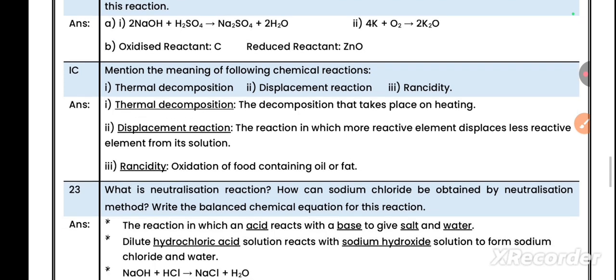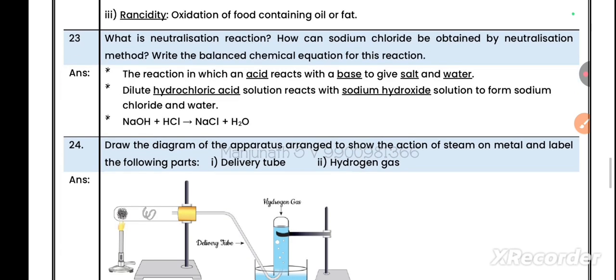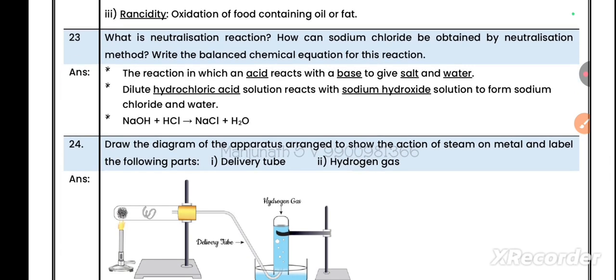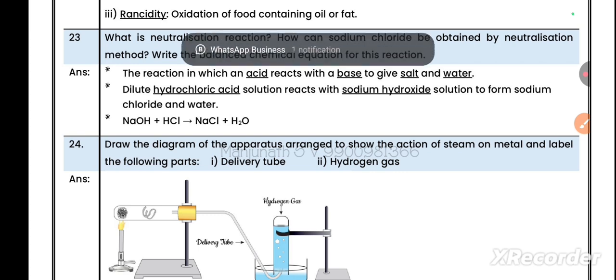Question number 23: What is neutralization reaction? How can sodium chloride be obtained by neutralization method? Write the balanced chemical equation. The reaction in which an acid reacts with a base to give salt and water is called neutralization reaction. Dilute hydrochloric acid solution reacts with sodium hydroxide solution to form sodium chloride and water. It's an example of neutralization reaction. The equation: NaOH + HCl → NaCl + H2O.